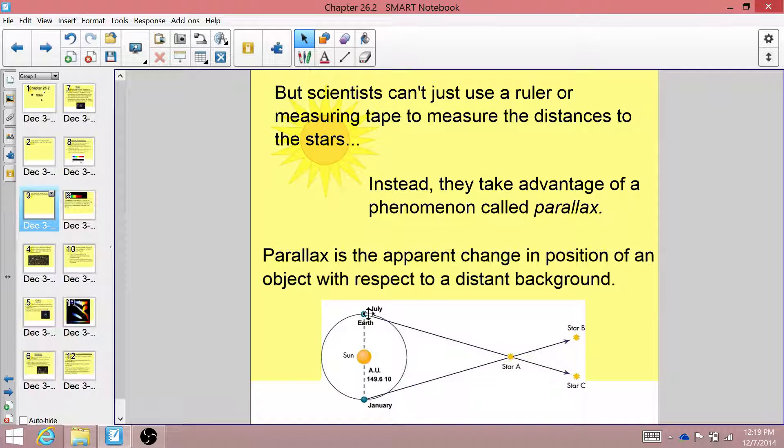For example, if we look at this picture, in July when we look at star A, we see star C behind it in the background. But then if we wait until January to look at star A again, instead of seeing star C behind it, we now see star B behind it.